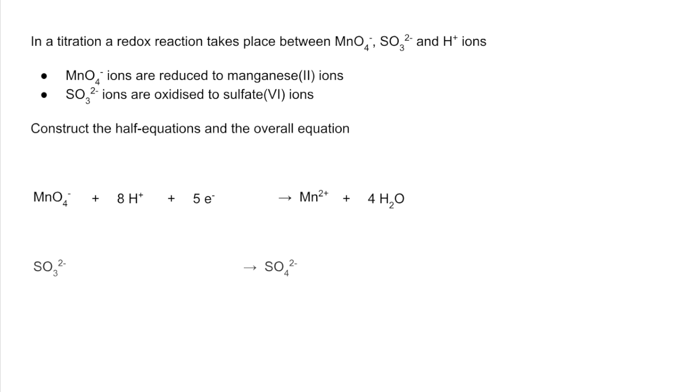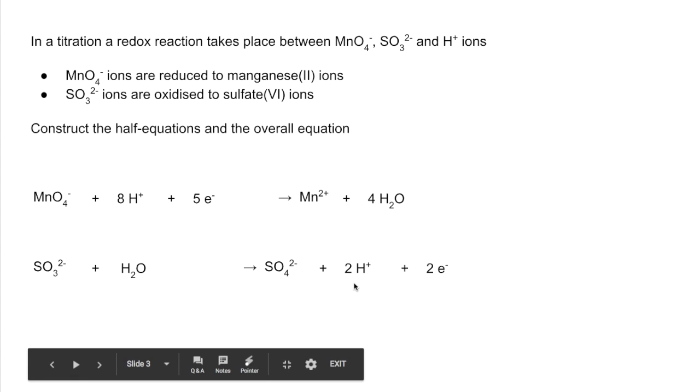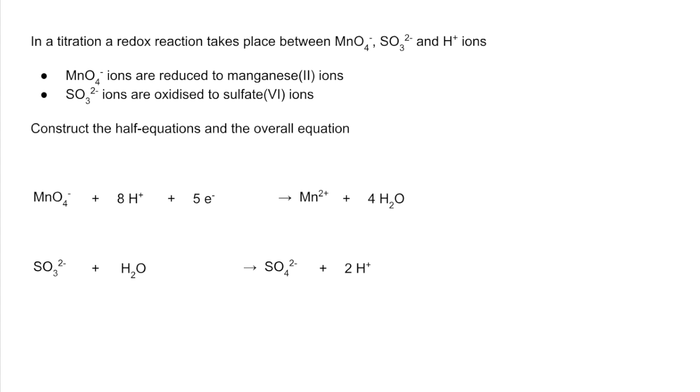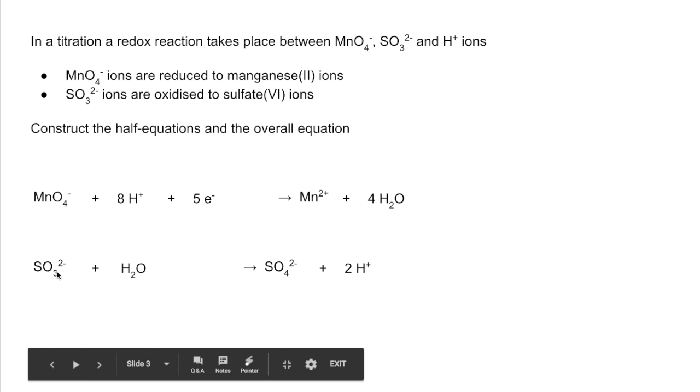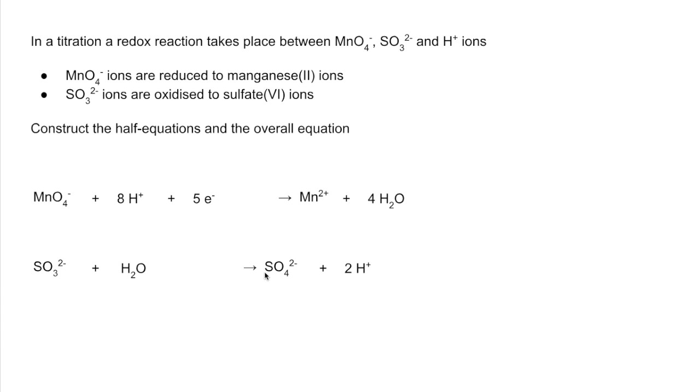The next one: SO₃²⁻ is going to sulfate 6, which is SO₄²⁻. Waters first: H₂O gets the oxygens to balance, that brings hydrogen in so we need 2 H⁺, and then electrons. We're going to need 2 electrons to bring the charge on the right hand side down to 2 minus. You could just go: that sulfur has an oxidation number of plus 4, it's going to plus 6, so it's gone up 2, so it's lost 2 electrons.